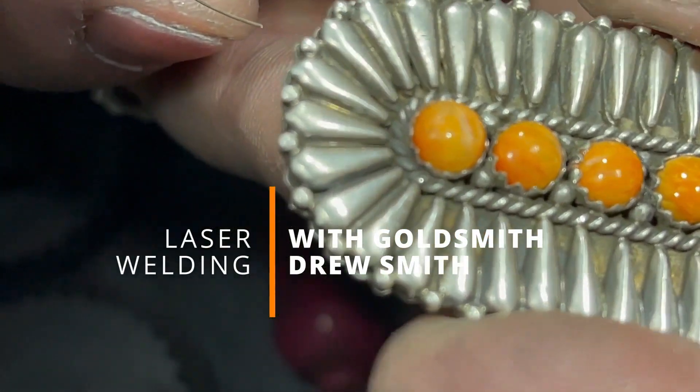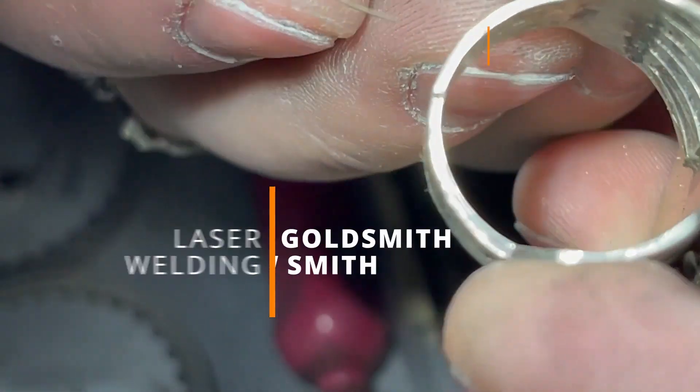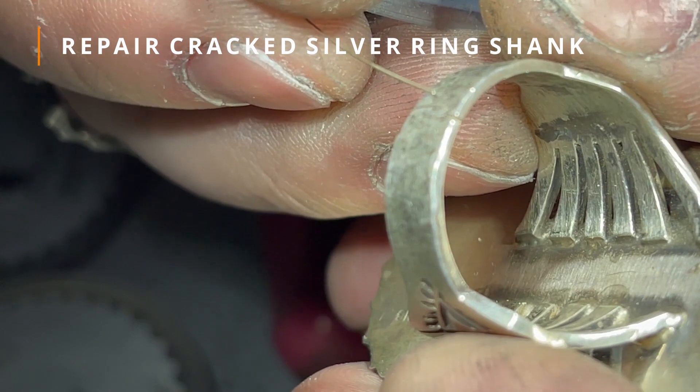This is a Native American ring that came in. The shank is cracked, so what we're going to do is try and repair that crack.